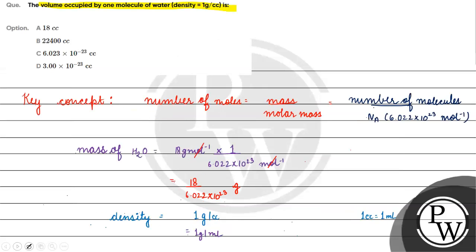This is the volume of one molecule of water. The correct answer for this question is option B: 3.0 × 10⁻²³ cc. I hope you understood it well. Thank you and all the best.